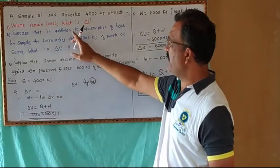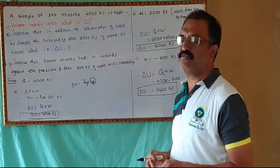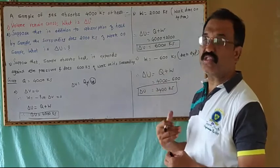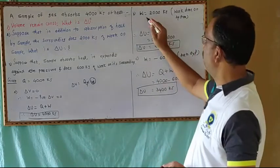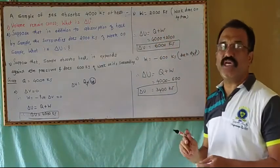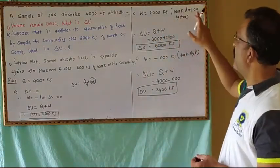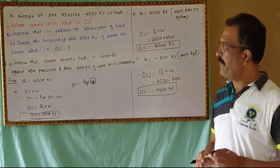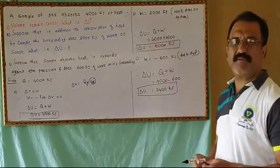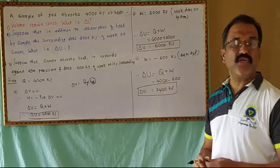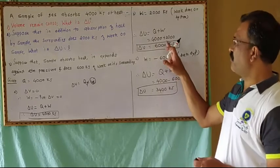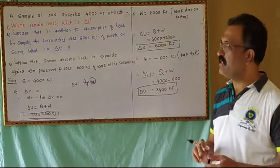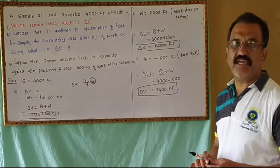For the second part: in addition to absorption of heat, the surroundings do 2000 kJ of work on the sample, so W = +2000 kJ (work done on the system). Applying ΔU = Q + W gives ΔU = 4000 + 2000 = 6000 kJ.